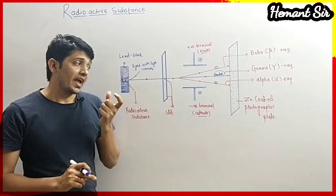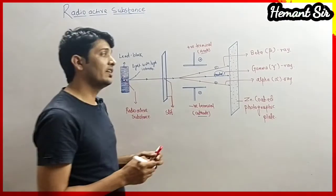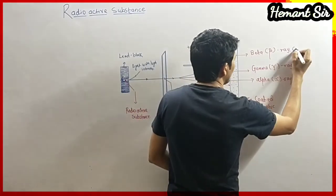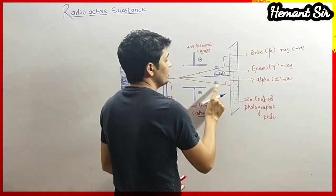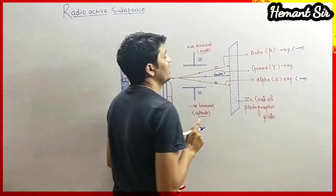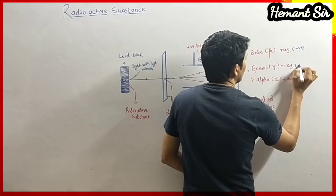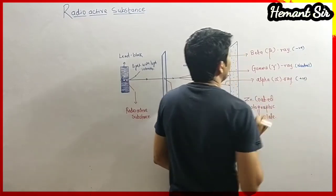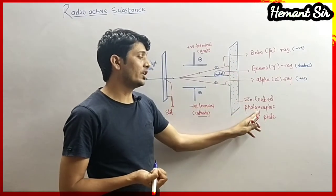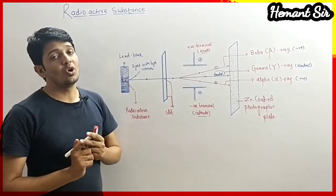They explained the charge on different radiation. In conclusion, beta radiation has negative charge, alpha radiation has positive charge, and gamma rays are neutral — meaning no charge. These radiations are detected on a zinc-coated photographic plate. This is the way we determine the charge on radiation.